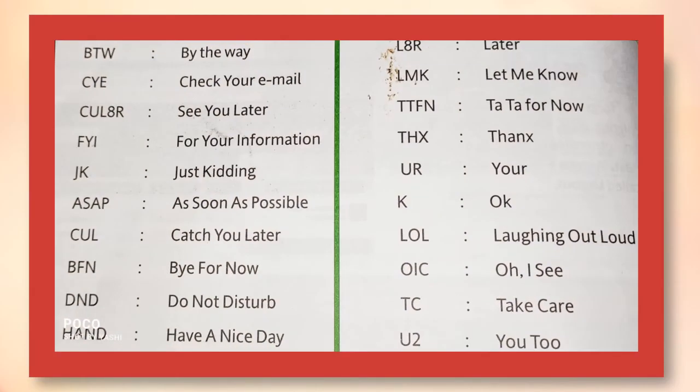Now we will have a look at all the abbreviations which we can use while typing an email. BTW — by the way. CYE — check your email. CUL8R — see you later. FYI — for your information. JK — just kidding. ASAP — as soon as possible. CUL — catch you later. BFN — bye for now. DND — do not disturb. HND — have a nice day.